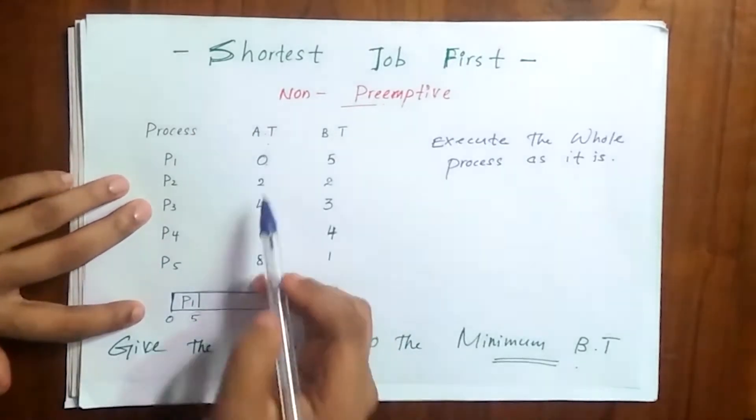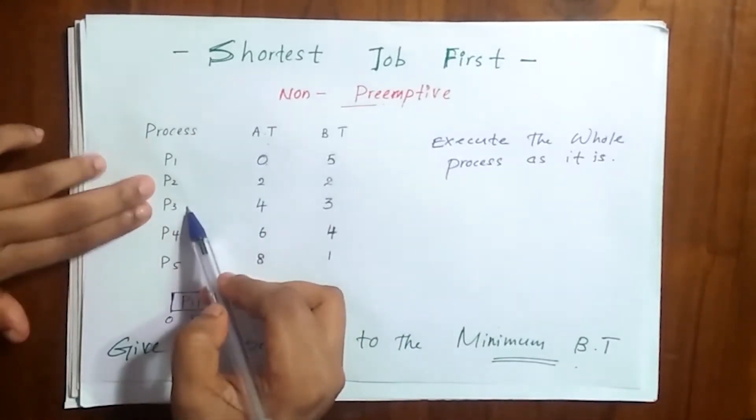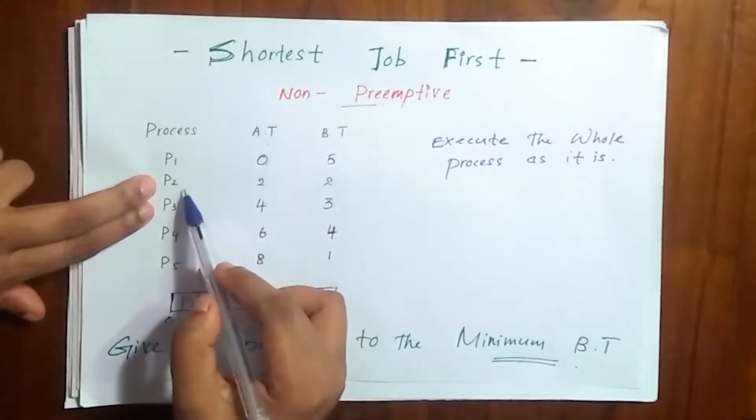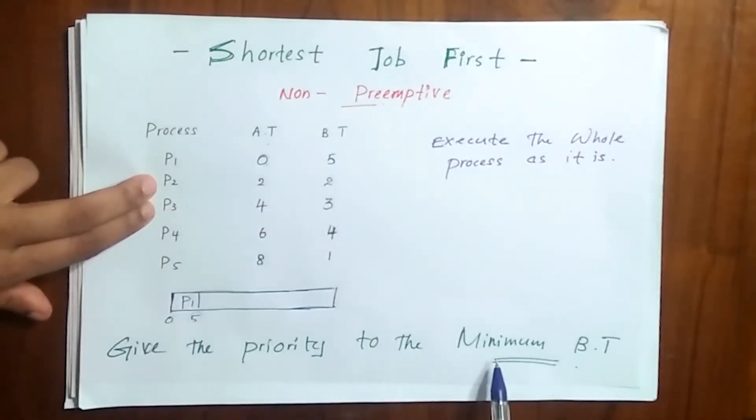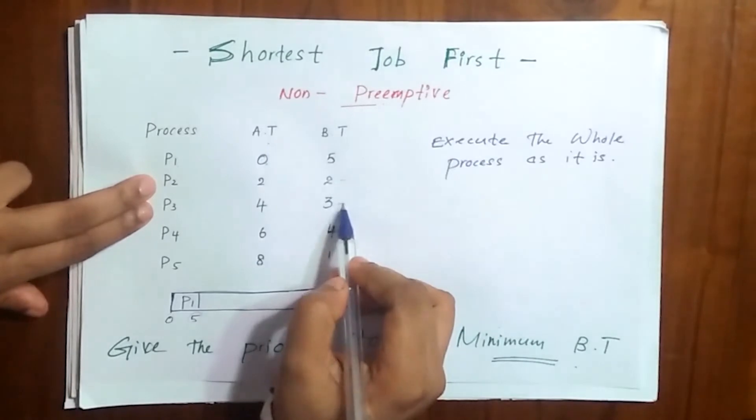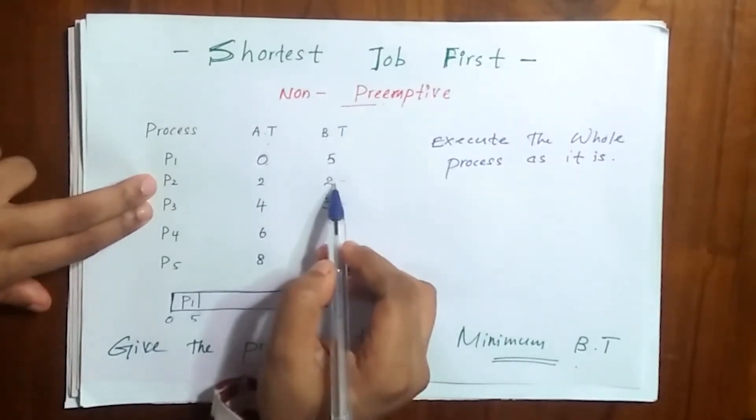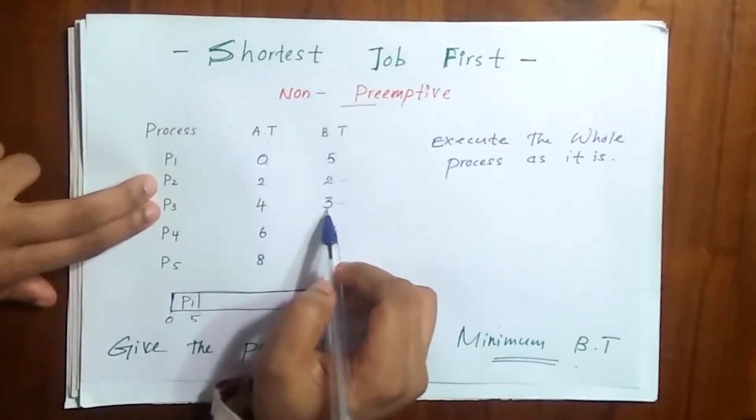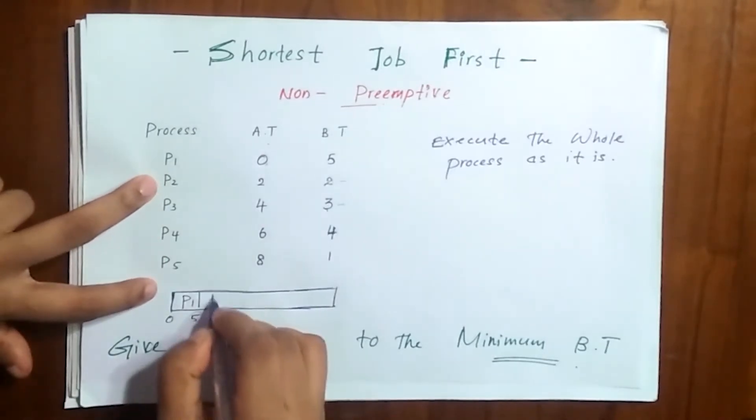Then from P2, P3, P4, and P5 you can see within this 5 seconds only P2 and P3 arrive. From P2 and P3, who has the minimum burst time? We have to check that. From these two it is P2 because it is 2, and P3 has 3, so we have to write P2 here.